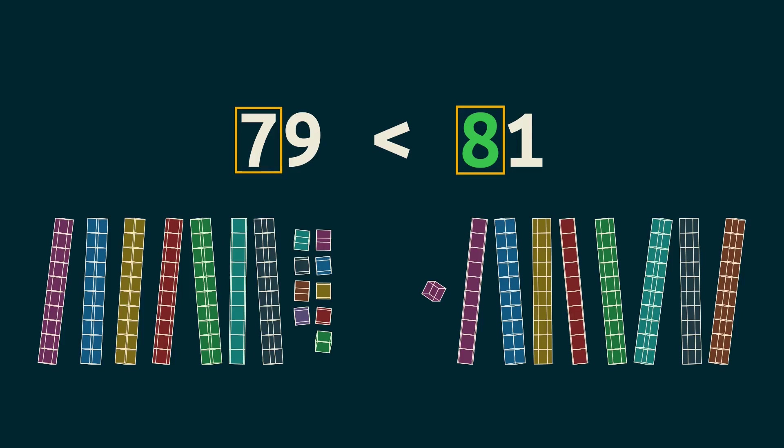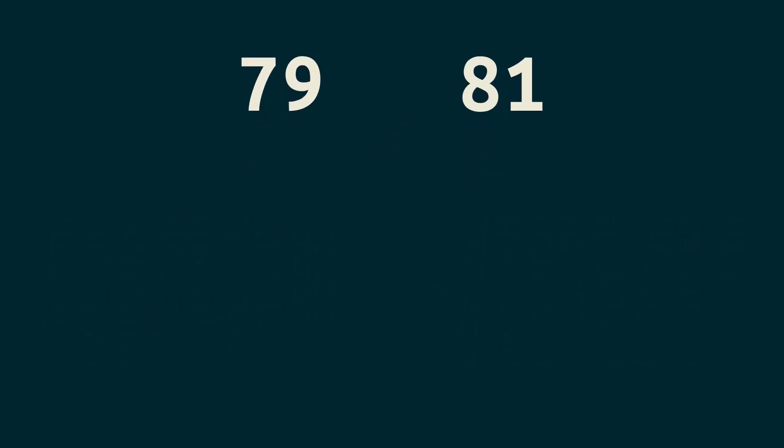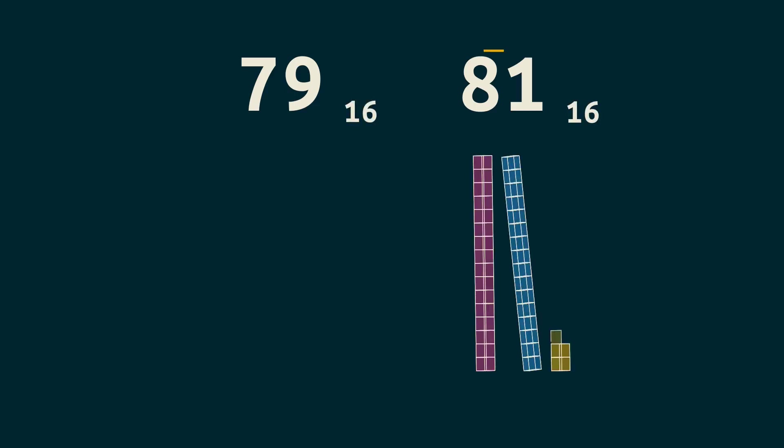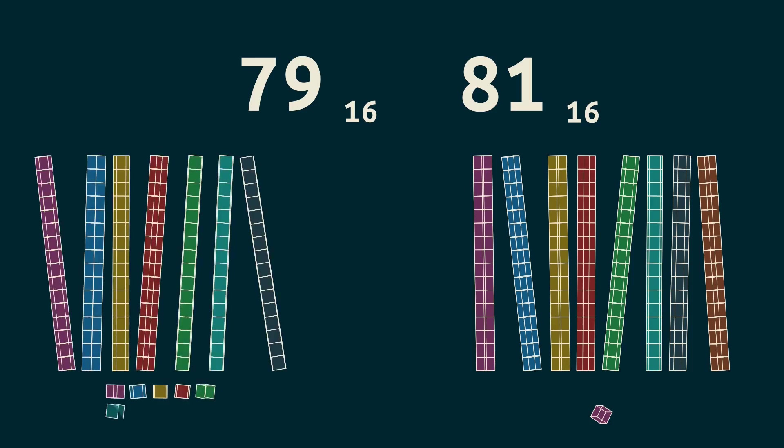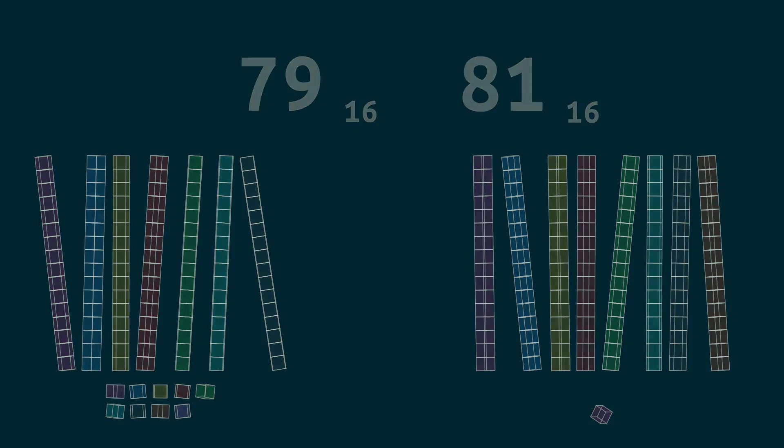But what if this was hex? Could these two numbers be hex? Sure. Let's add a little 16 to be clear. Now this just means 8 sticks of 16 plus 1 extra cube. Does the same logic still work? Of course, 8 sticks of 16 are always going to be bigger than 7 sticks plus some number of extra cubes that weren't enough to make a full stick.